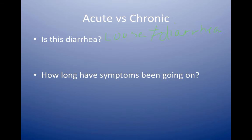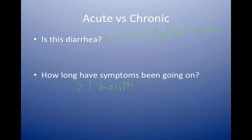I also ask them how long the symptoms have been going on. If it's more than a month, that puts them into chronic diarrhea, and that makes me less concerned that they have an infectious process going on, and more worried about something like inflammatory bowel disease or irritable bowel disease, malabsorption, or another GI problem, and less worried about an infection.